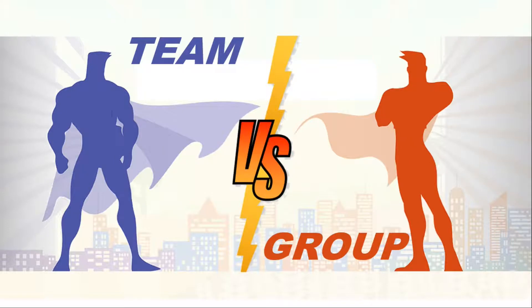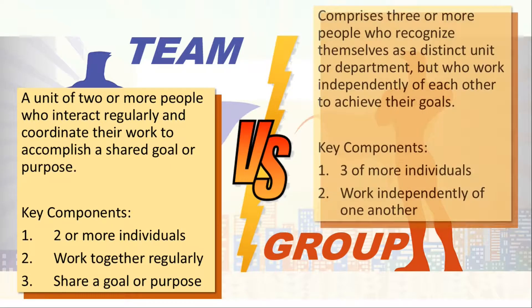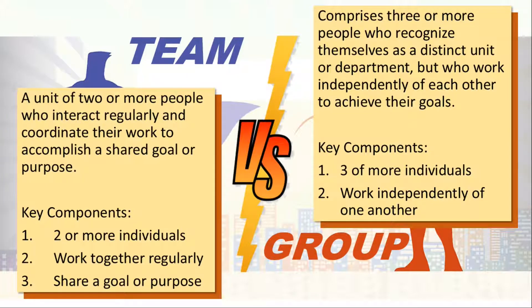A team is a unit of two or more people who interact regularly and coordinate their work to accomplish a shared goal or purpose. Key components are: two or more individuals, they work together regularly, and they share a common goal. A group, on the other hand, comprises three or more people who recognize themselves as a distinct unit or department but work independently from each other to achieve their goals. Key components are: three or more individuals who work independently of one another.